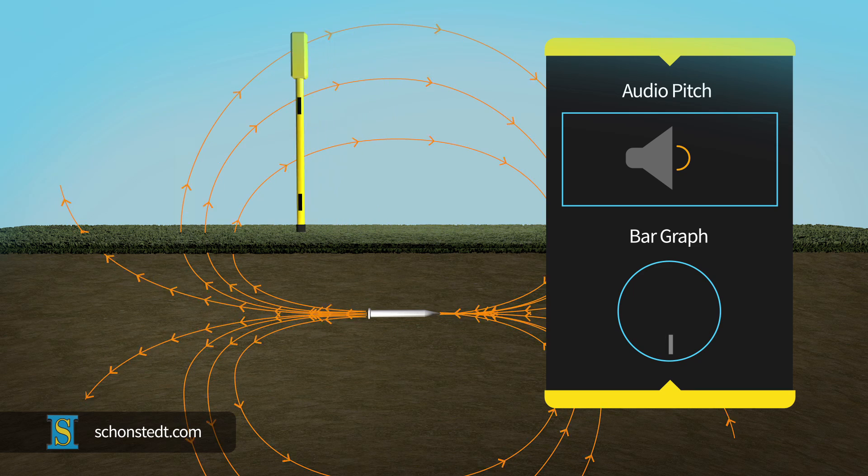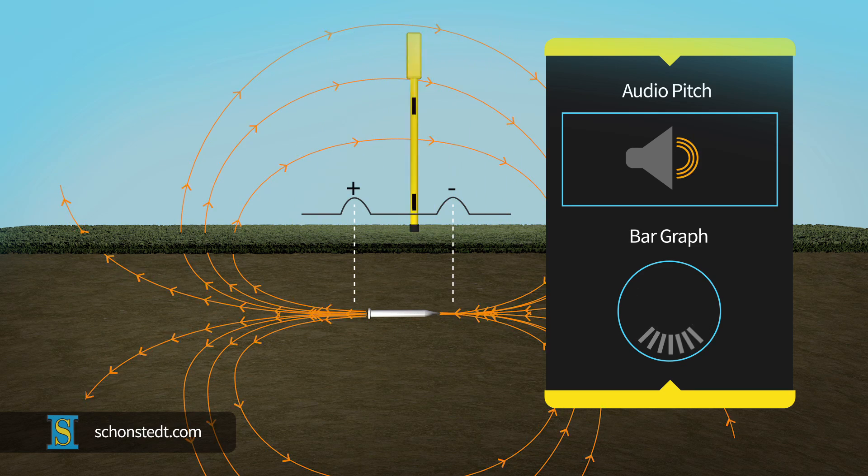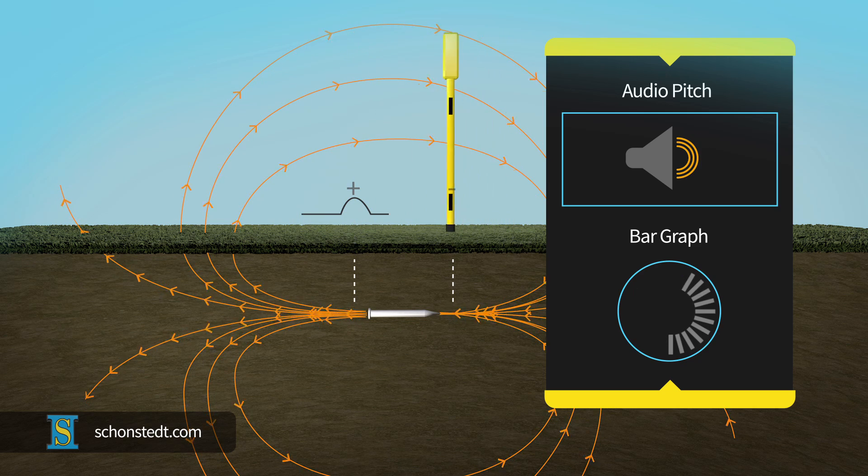Some Schoenstatt locators also indicate polarity, which can be useful in determining if the target is oriented vertically or horizontally. This is accomplished by observing the polarity change at each end.